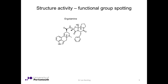We're going to skip over now to a slightly different system and use the idea of looking for pharmacophores. Pharmacophores, if they haven't already been defined for you, will be covered in another course. But we're looking for functional groups that confer biological action of certain molecules. This molecule in the middle here is ergotamine — it's part of the ergoalkaloid family.